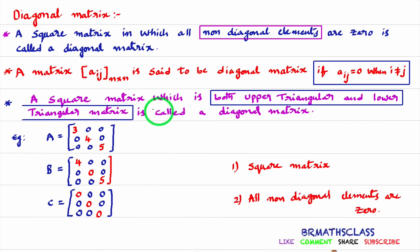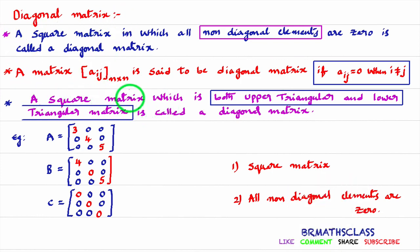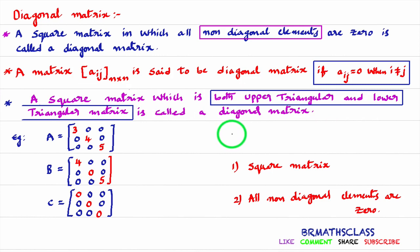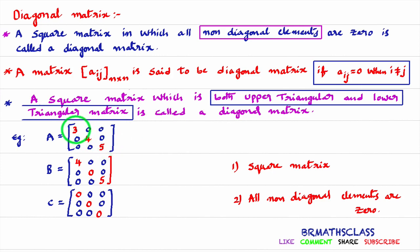Now the third version of the diagonal matrix definition. A square matrix which is both upper triangular and lower triangular is called a diagonal matrix. To understand this, you must know what is an upper triangular matrix and a lower triangular matrix. An upper triangular matrix is a square matrix in which all elements below the diagonal elements are 0.